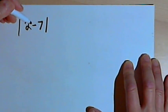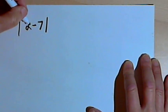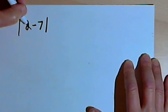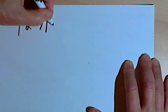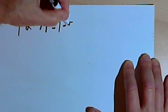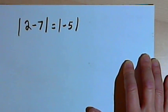So in terms of order of operations, I'm going to deal with the expression between the bars before I actually do anything about the absolute value. So 2 minus 7 is negative 5. So the absolute value of 2 minus 7 is the same as the absolute value of negative 5.